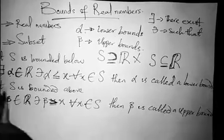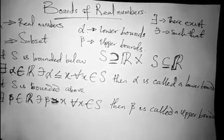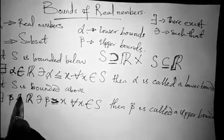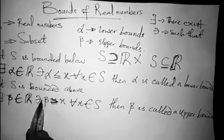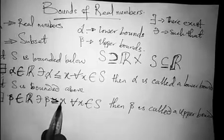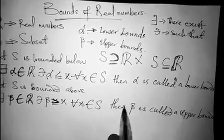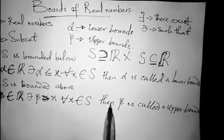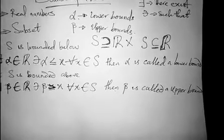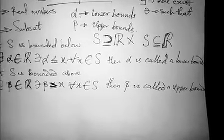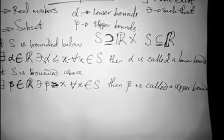Your set S is said to be bounded above if there exists beta in R, that is a real number, such that beta is greater than or equal to x for all x in your set S, which is a subset of R. Then beta is called the upper bound.